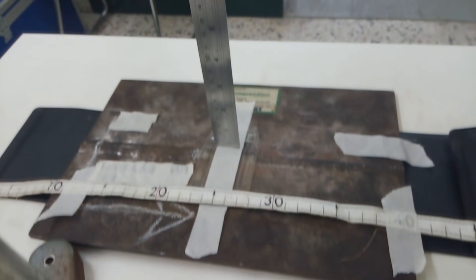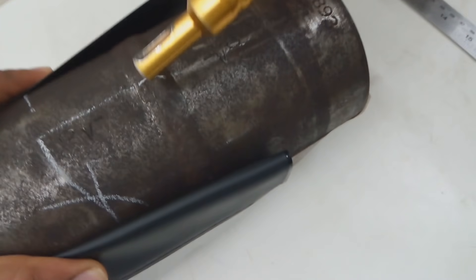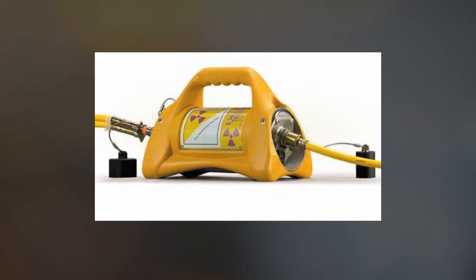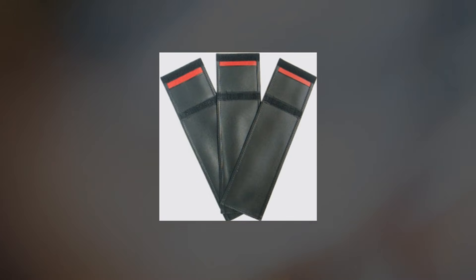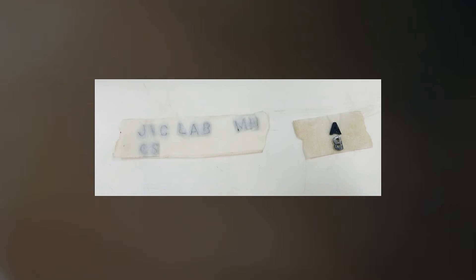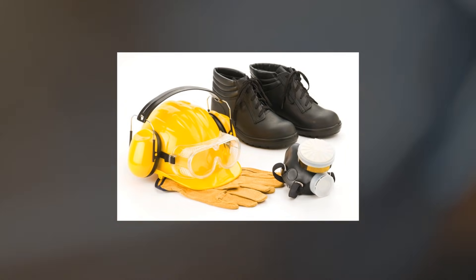There are a lot of techniques of RT inspection. In this short video we'll show some of these techniques which inspect by using: Single-Wall Single Image Technique, Panoramic Technique, Double-Wall Single Image Technique, and Double-Wall Double Image Technique. The equipment and tools are: Gamma-ray Source System, Radiographic Films, Cassettes, and Intensifying Screens, Lead Markers, IQI Penetrameters, Weld Specimen, Magnetic Stand, Safety Gear, and Exposure Calculator.